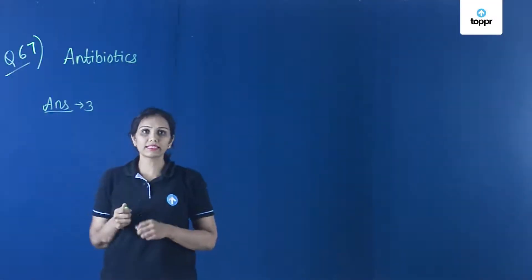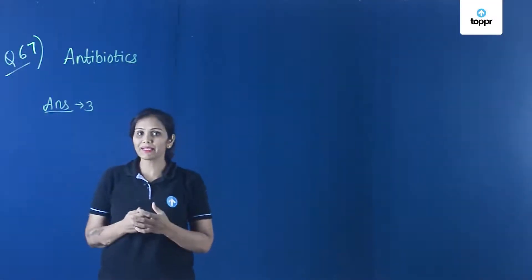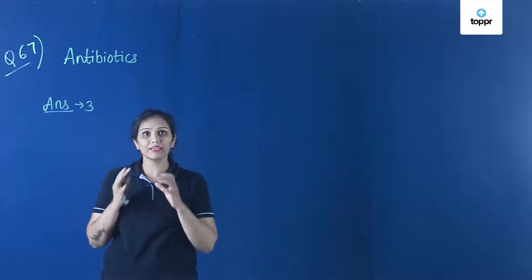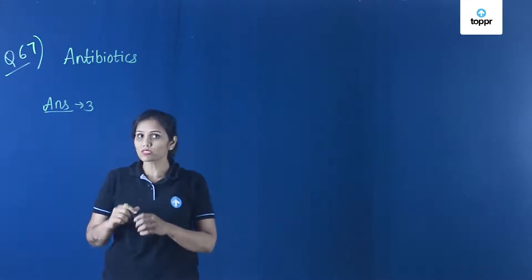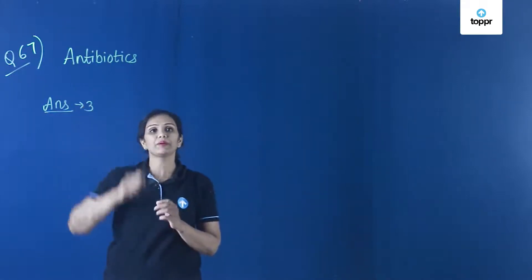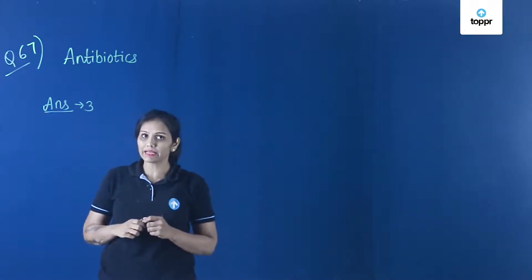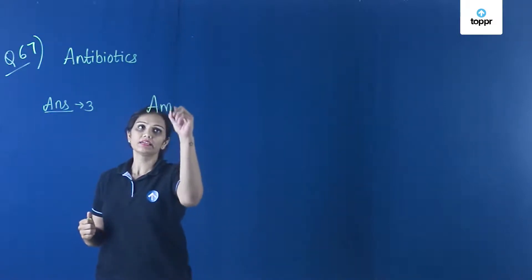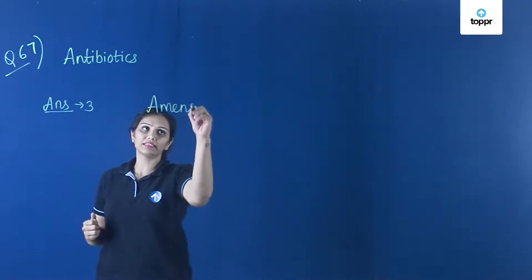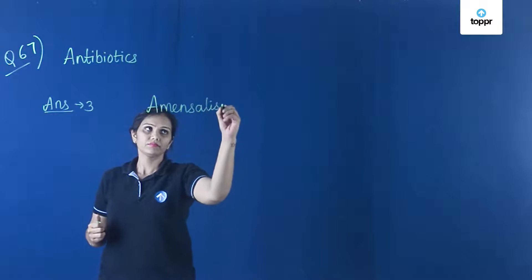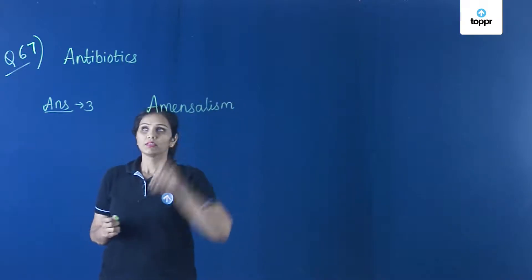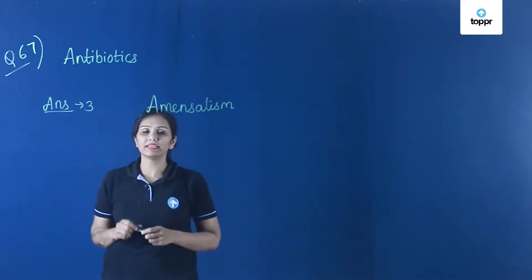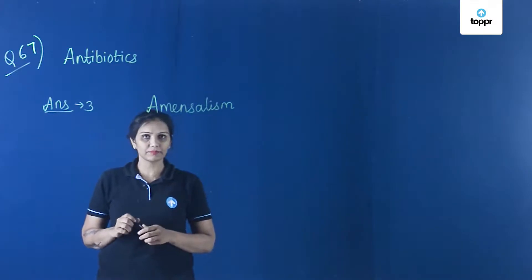Question number 67: Which kind of population interaction is widely used in medical sciences for the production of antibiotics? The correct answer to question number 67 is option 3 — Amensalism.